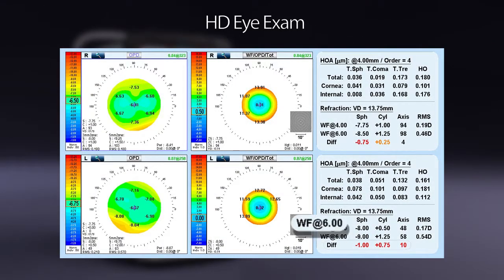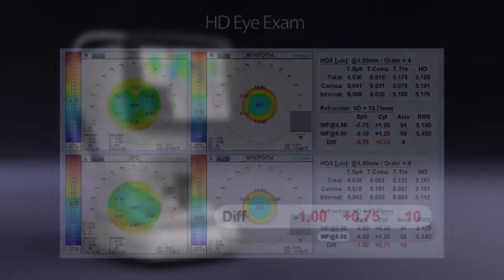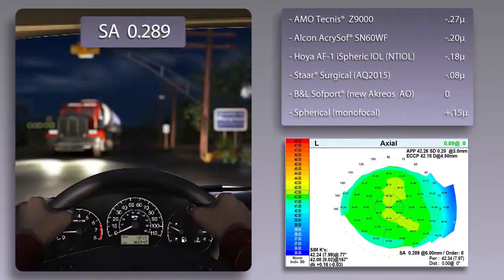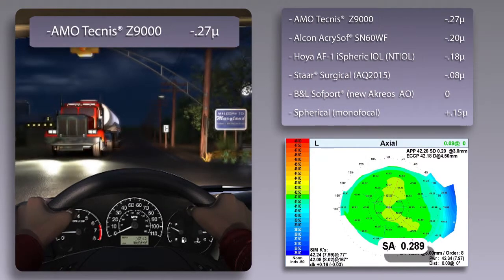HDI exam calculates the patient's night vision to the mesopic pupil and shows the difference between night and day. IOL applications include spherical aberration of the cornea for aspheric IOL selection.